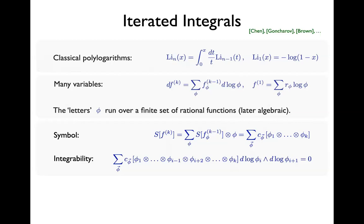Not any word will do: I need to ensure that partial derivatives still commute. To enforce this, I pick any sequential pair of letters and evaluate d log φᵢ ∧ d log φᵢ₊₁. Summing over the rest of the symbol with its coefficients, this should vanish — a consequence that two applications of the exterior derivative vanish. This is why I call it integrability.